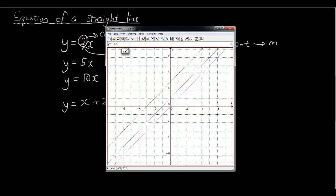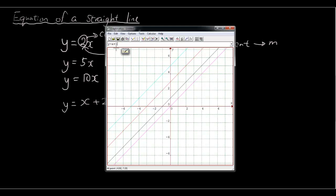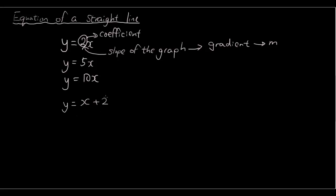x plus 5 — you can probably guess the light blue line is here, and it's the same slope but it's gone up 5 units from our starting point. So the number that we plus or minus after x — let's do x minus 2 as well. You can see we have generated a green line that has moved down by 2 units. So the number after x is the y-intercept.